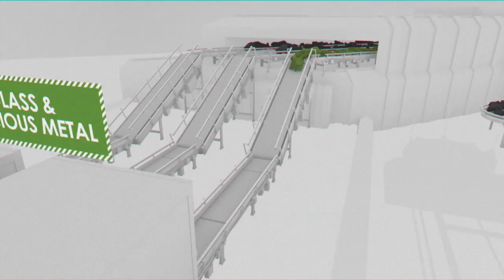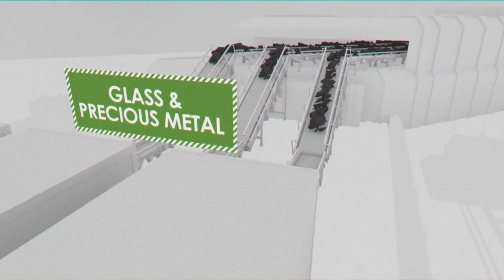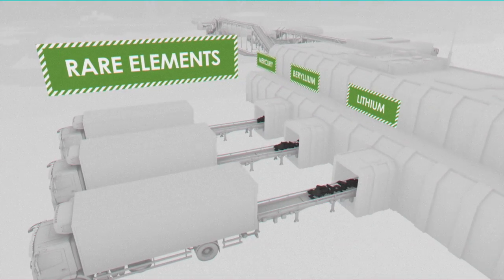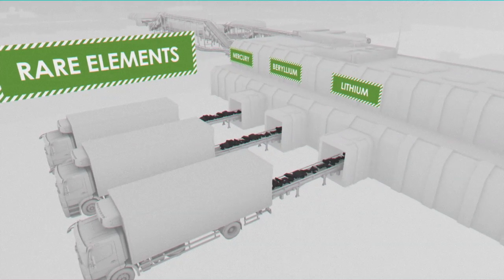Glass and precious metals like gold are sold to manufacturers to be made into things like Olympic metals. And rare elements like lithium, beryllium and mercury are all treated with the respect they deserve.